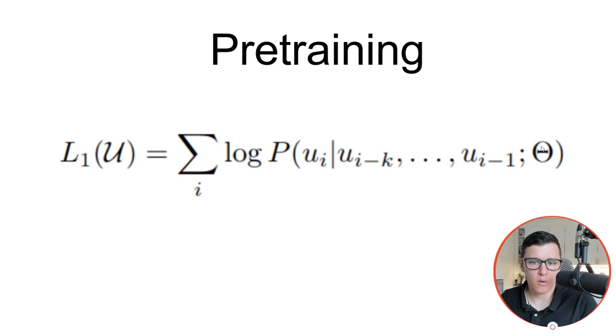We want to maximize the next predicted word given a sequence of previous words with respect to the model parameters. And then k here represents a context, how many words we have in context.